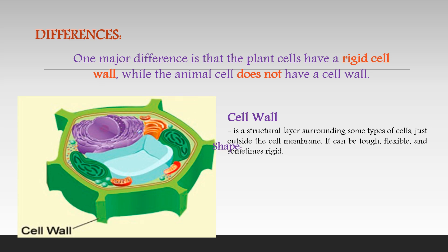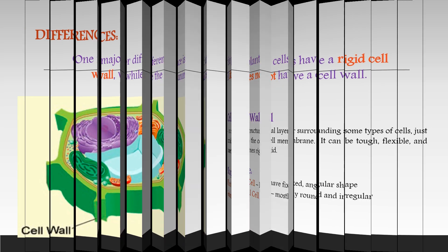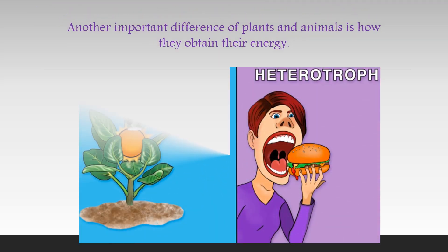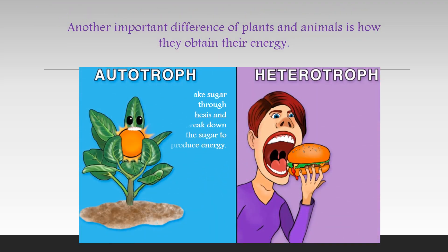As a result, plant cells have fixed angular shapes, while animal cells are mostly round and irregular. Another important difference between animals and plants is how they obtain their energy. Plants are autotrophs, which means they produce their own food. Meanwhile, animals are heterotrophs, meaning they must ingest their food.